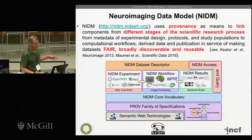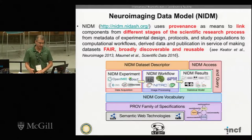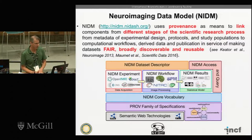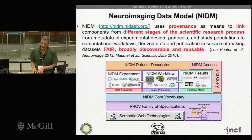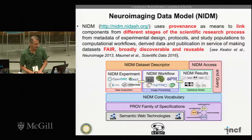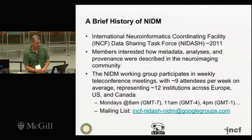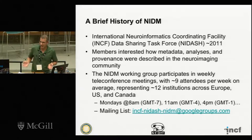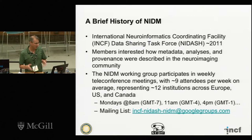We have a core vocabulary and try to push semantic web tools, terminologies, and ontologies in our domain of neuroimaging. The idea is that we build these models for different stages of the scientific research process, making data more broadly discoverable and reusable by having records of precisely what was done to the data. This working group formed out of the INCF data sharing task force in about 2011, with members interested in how metadata, analyses, and provenance could be described in neuroimaging.